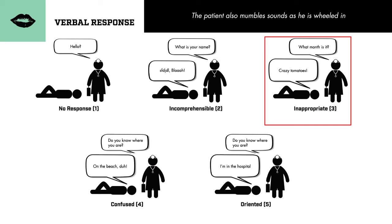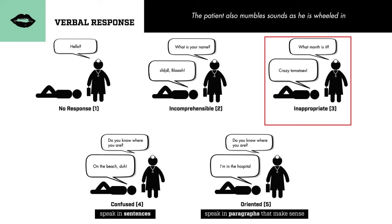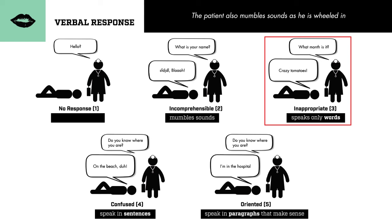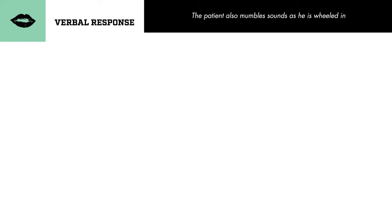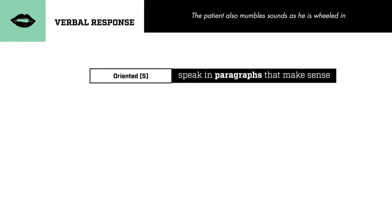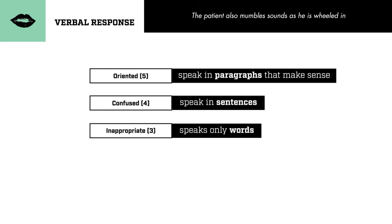The way I remember the verbal hierarchy is by assigning five points to the patient who could speak in paragraphs that make sense — basically someone who could tell you a story of why they are in the hospital. Then four points for someone who speaks in sentences but not necessarily making any sense, so they're confused. Next, three points for a person speaking only words but not coherent sentences. Two points for gibberish or mumbling. And one point for nothing. So just remember to judge a person by assessing their ability to speak in paragraphs, sentences, words, gibberish, or nothing.